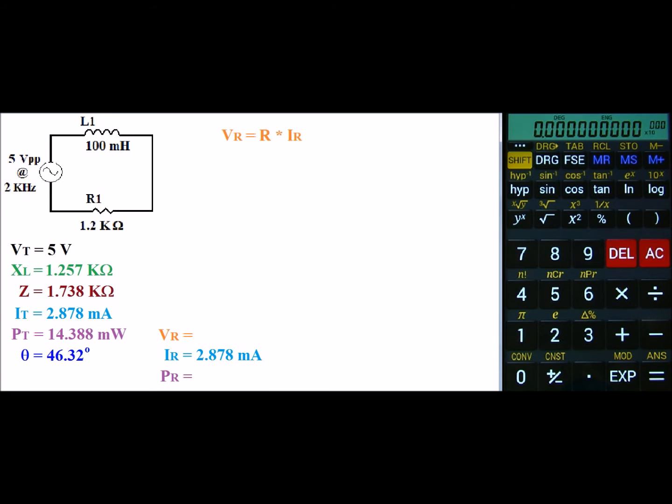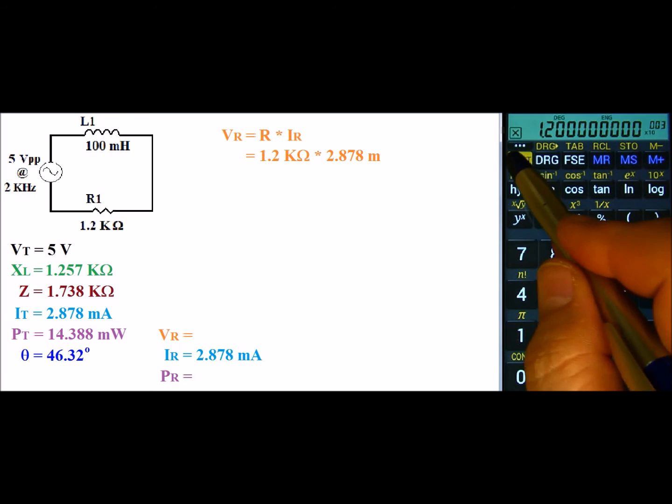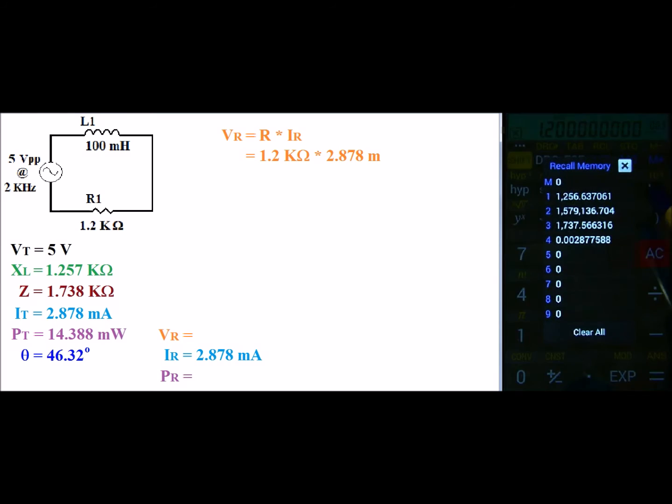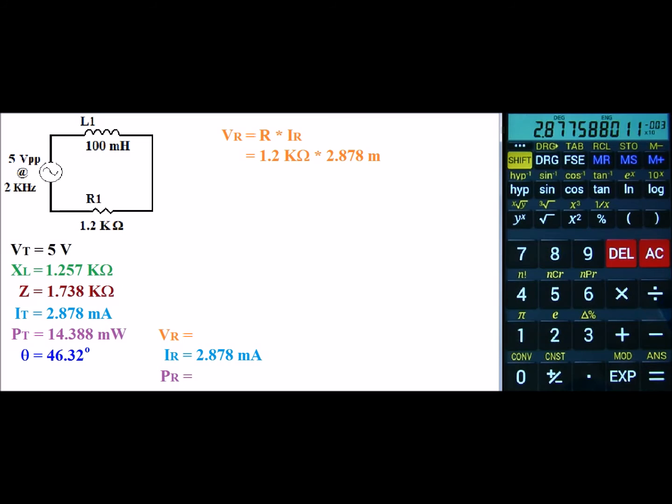So the first value we can find is Vr. Vr is simply R times IR, or 1.2k times 2.878 milli. So I'm going to take 1.2 exponent 3 times, and then I'll recall my current. And that gives us a value of 3.453 volts.